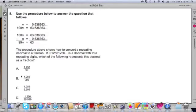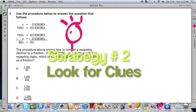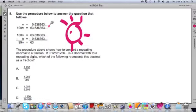Here's how it goes. Use the procedure below to answer the question that follows. I read this over and study this because it's always important to look at these diagrams. The one thing that I see in this model is that it has repeating decimals - that's what these dots mean. It means that this 0.63 is actually repeating. So right away, one of the big characteristics of this problem looks like it has to do with repeating decimals. The procedure above shows how to convert a repeating decimal to a fraction. If 0.1256 is a decimal with four repeating digits, which of the following represents this decimal as a fraction?